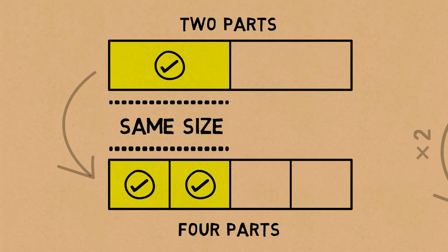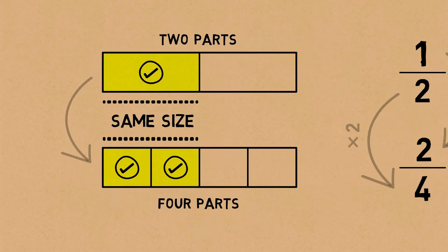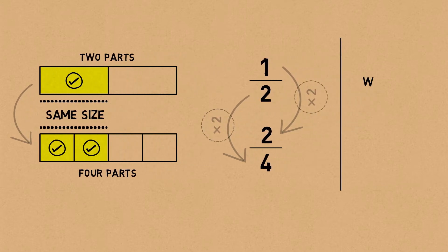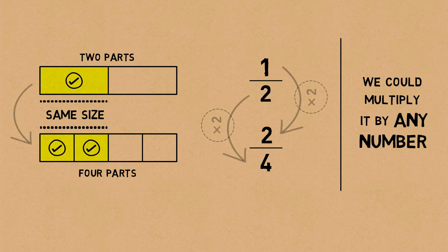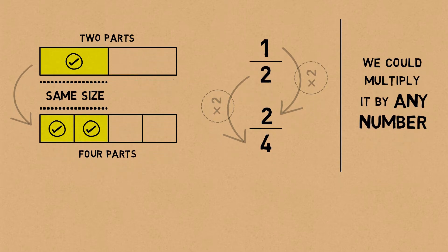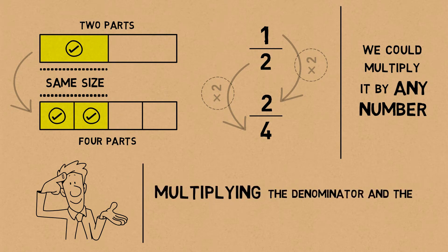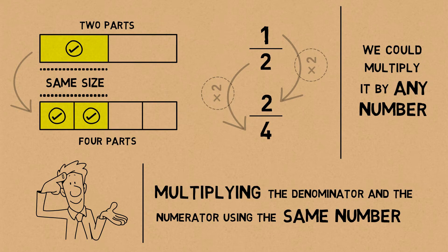We could split it up into more pieces — we could multiply the denominator and the numerator by three, four, five, six, any number — and get an equivalent fraction. So method one is by multiplying the denominator and the numerator by the same number.